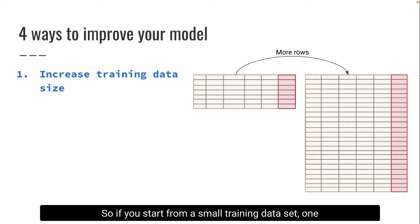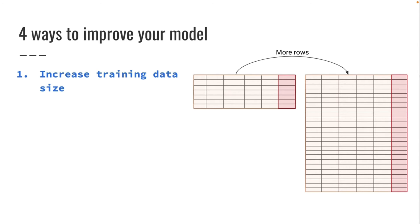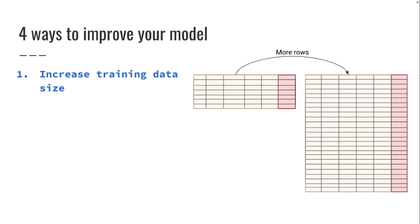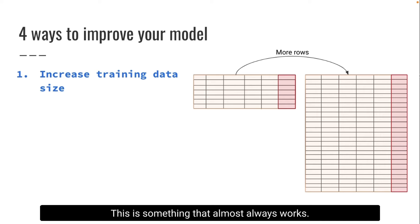And essentially there are four of them. The first one is about increasing the training data size. So if you start from a small training dataset, one way which almost always works is to extend the dataset. For example, you use historical data from the last two months to train your first model, you can simply extend this window and use historical data going back to one year, and then retrain the exact same model but with a larger dataset. This is something that almost always works.